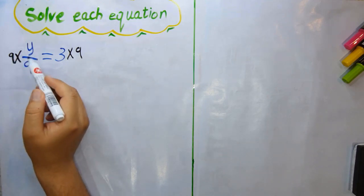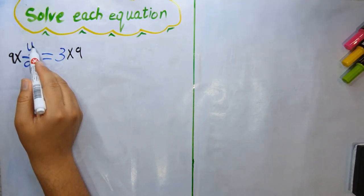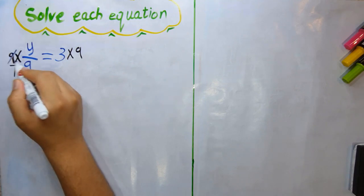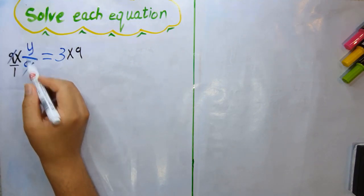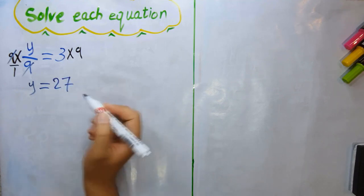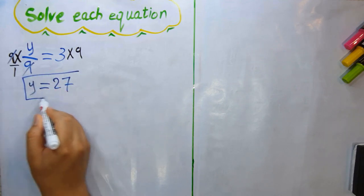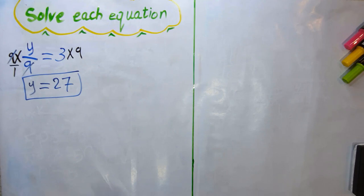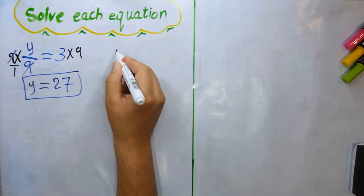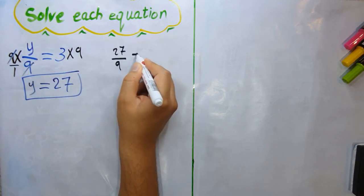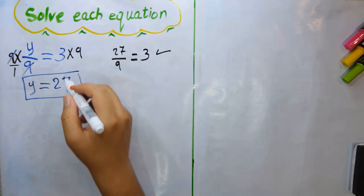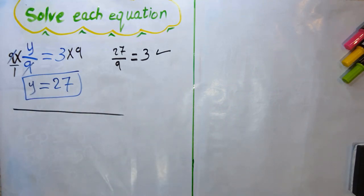Multiplying the left side: 9 × (y/9) — we can write 9 as 9/1, and cancel 9 in the numerator with 9 in the denominator, leaving y. On the right side: 3 × 9 = 27. So y = 27. Check: 27 ÷ 9 = 3. Correct!